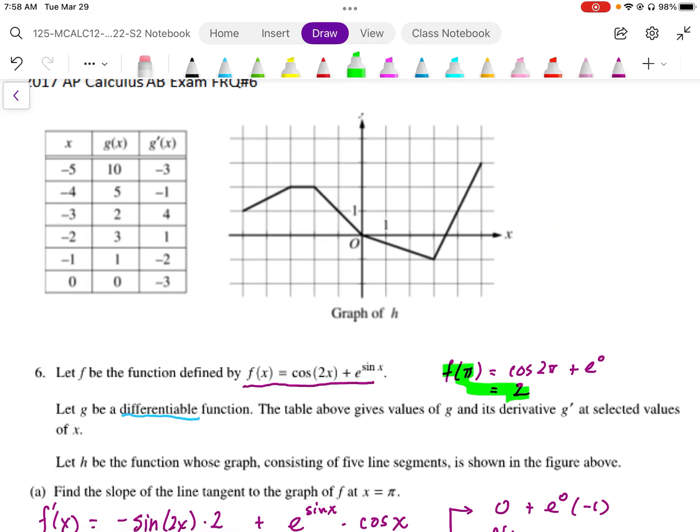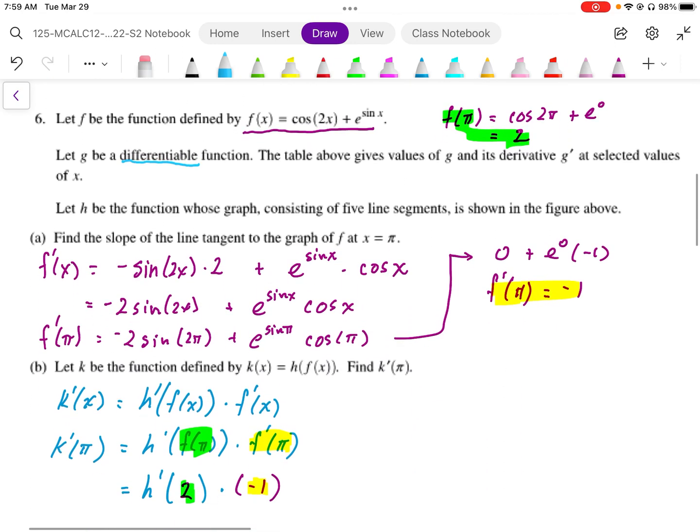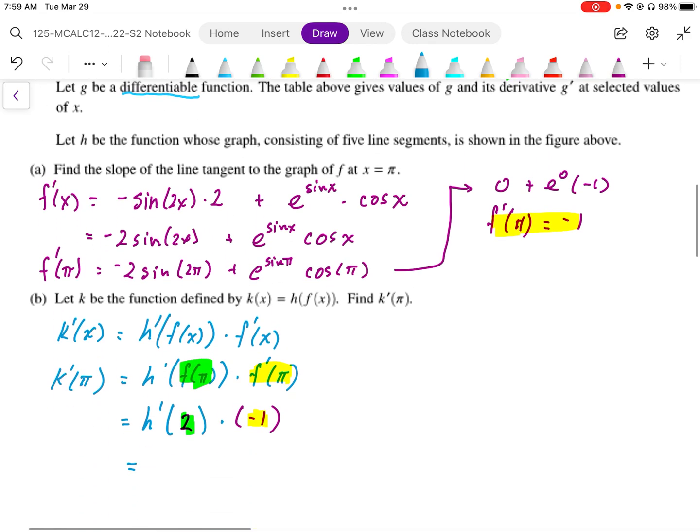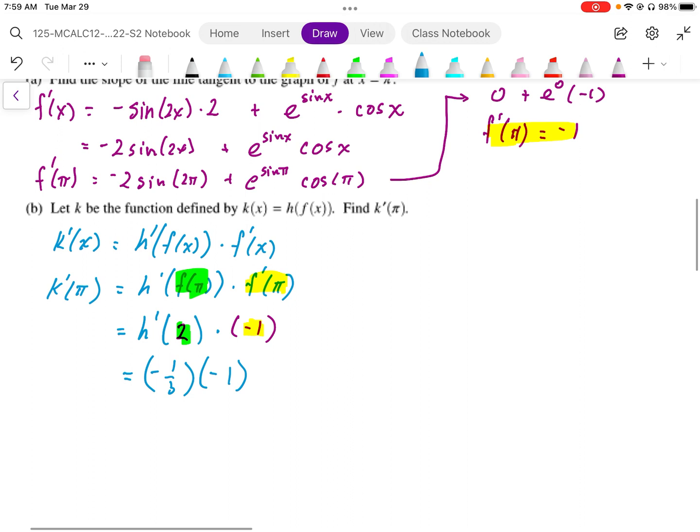So for that I go back to my graph here. At x equals 2, I'm looking for the slope value of that line. So essentially I'm trying to find the slope of that segment. And I can see that the rise is going to be negative 1. The run is 3. So that value is going to be h prime of 2 is going to be equal to negative 1 third. So I plug in the negative 1 third into here. I have my value of negative 1. So the slope of k, the k graph at pi is going to be equal to positive 1 third.